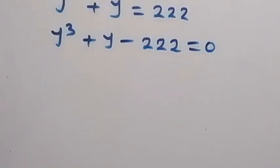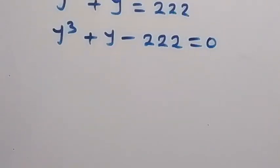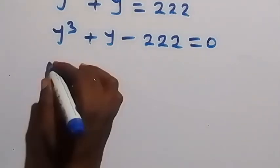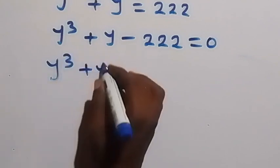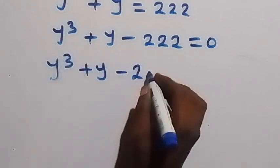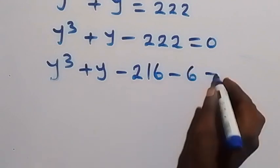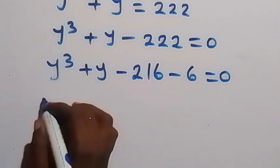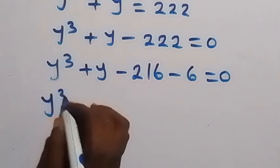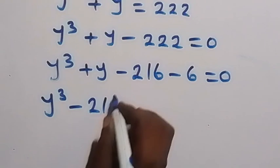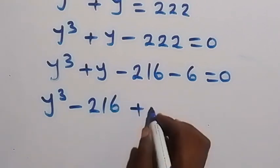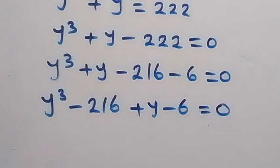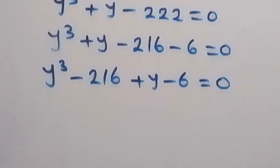We can split minus 222 as minus 216 minus 6. So the equation becomes y raised to power 3 plus y minus 216 minus 6 equals zero. Rearranging this, we have y raised to power 3 minus 216, then plus y minus 6, equals zero.